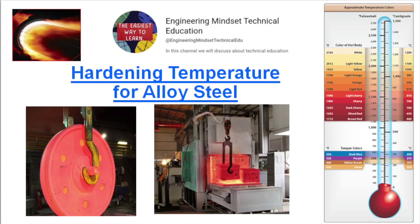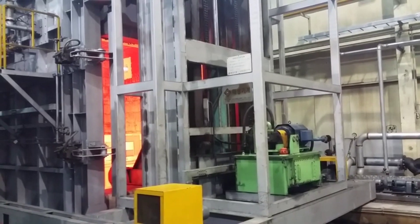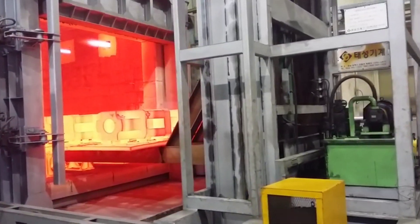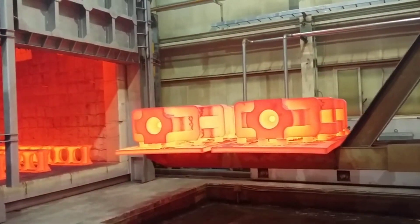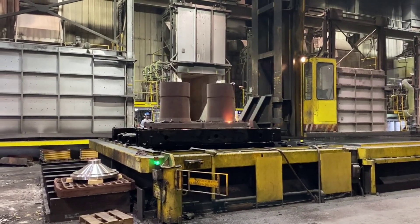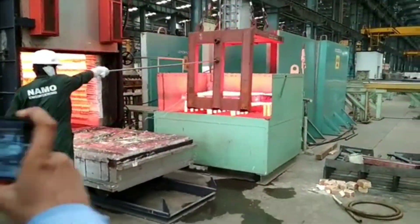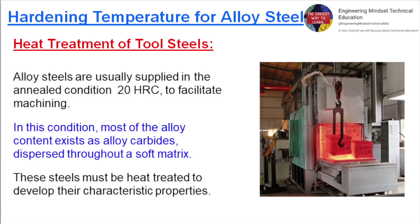Hardening temperature for alloy steel. Heat treatment of tool steels. Alloy steels are usually supplied in the annealed condition at 20 HRC to facilitate machining. In this condition, most of the alloy content exists as alloy carbides dispersed throughout a soft matrix. These steels must be heat treated to develop their characteristic properties.